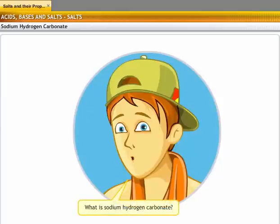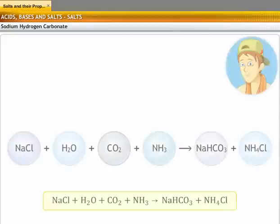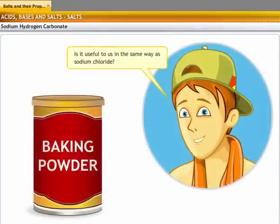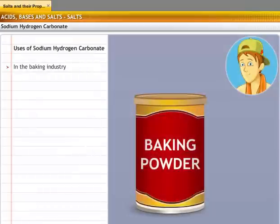What is sodium hydrogen carbonate? Sodium hydrogen carbonate is produced when a concentrated solution of sodium chloride reacts with ammonia and carbon dioxide. Is it useful to us in the same way as sodium chloride? Yes, it is useful in many ways. One example would be that it is an important ingredient in baking.